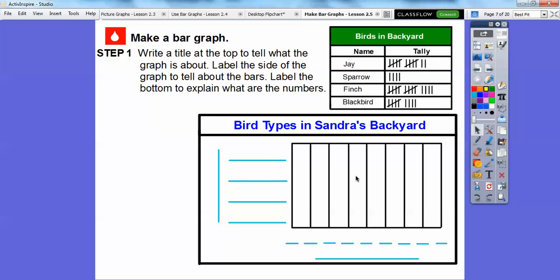Bird types are over here. Then we're going to label the bottom to explain what these numbers are. The bottom is going to represent how many birds are in each category, so we'll write Number of Birds.